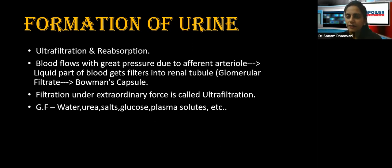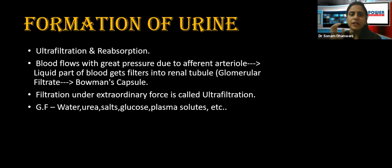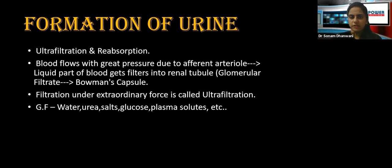There are afferent and efferent arterioles — afferent brings blood into the organ, efferent takes blood away. Blood flows with great pressure due to the afferent arterioles, so the liquid part of the blood gets filtered into the renal tubule. This liquid part filtered from the glomerulus into Bowman's capsule is known as the glomerular filtrate. Because filtration happens under extraordinary force, it is called ultra filtration.